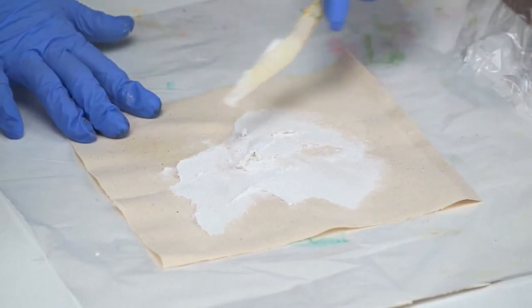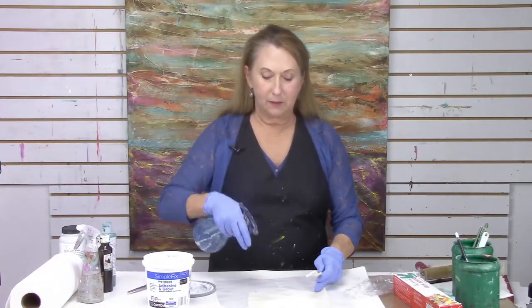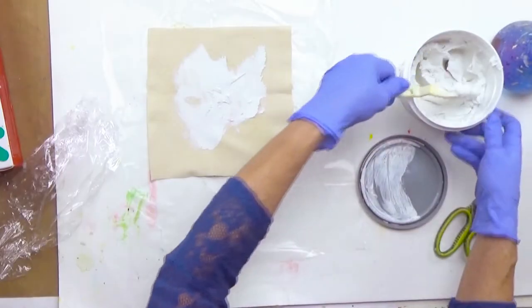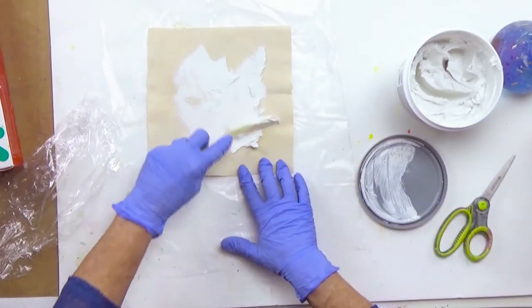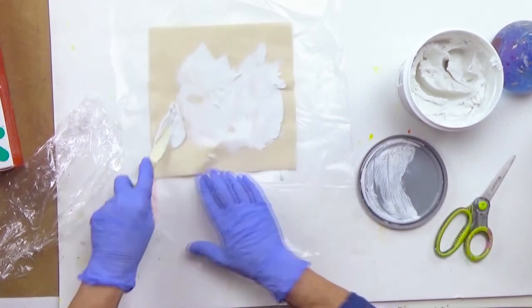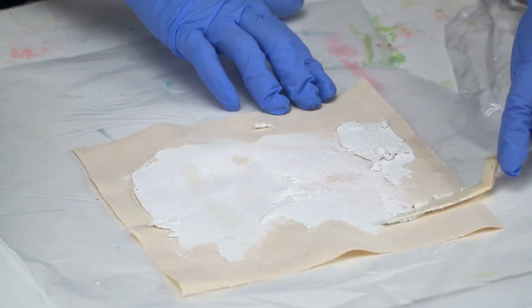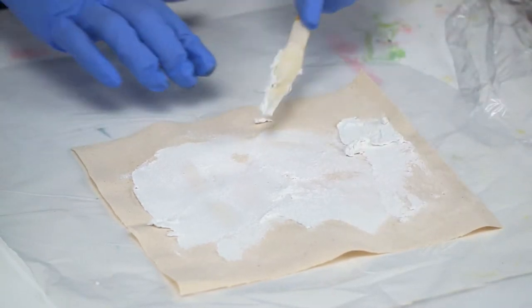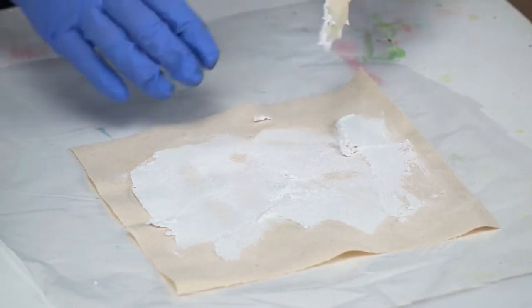I want it to make contact. And if I need to mist a little water, if it's drying out too fast, I can do that. If I just kind of went like this and didn't really press it in, it could pop off of this fabric later on.